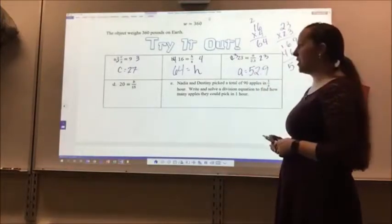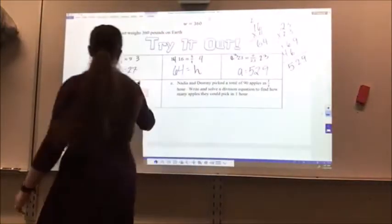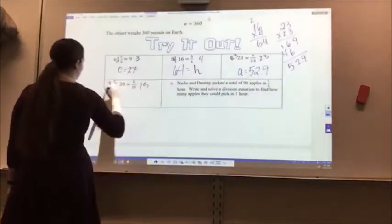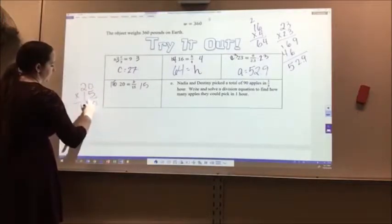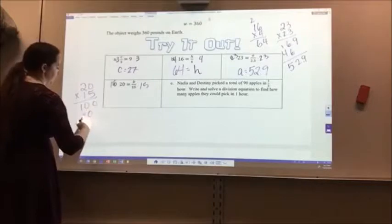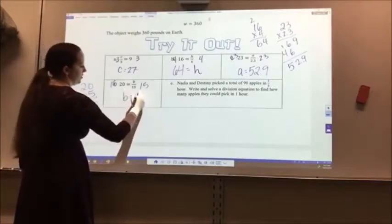For letter D, 20 equals B divided by 15. I multiply both sides by 15. So 20 times 15 is 300. B equals 300.